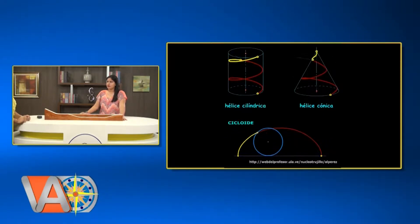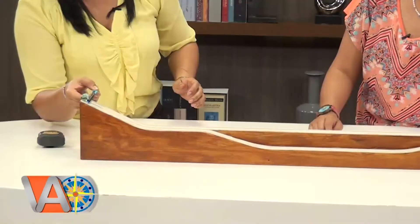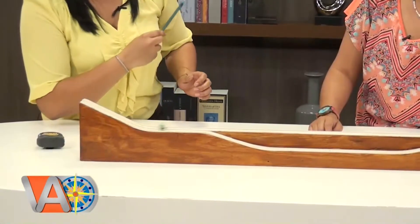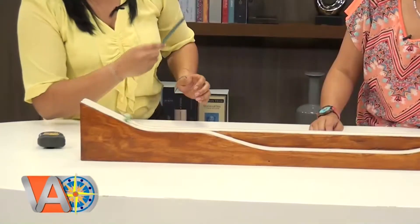La palabra braquistocrona viene del griego: braqui significa menor y crona significa tiempo. Eso significa que la partícula que se mueve en una curva con esta propiedad de braquistocrona va a llegar en menor tiempo que en la línea recta. Si lo vemos en cámara lenta, vemos que la partícula que se mueve en la curva llega mucho más rápido, en menor tiempo, que la que se mueve en línea recta.